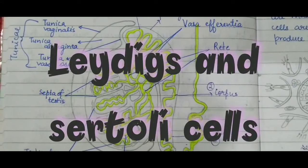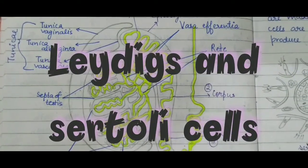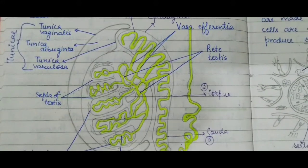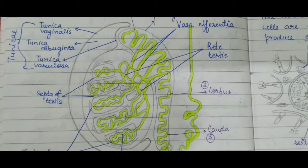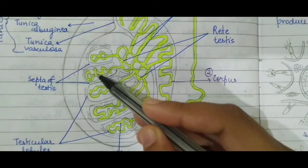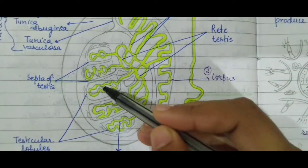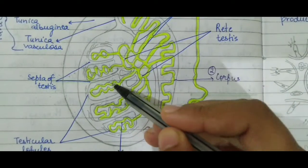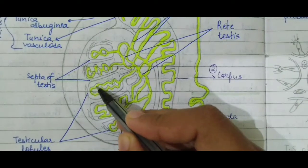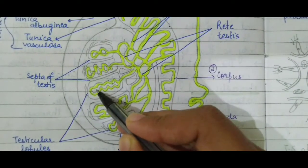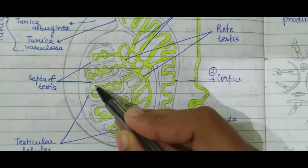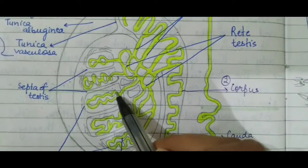In this video we are going to study the difference between Leydig cells and Sertoli cells. In the previous videos of the male reproductive system, we studied that in the testes there are testicular lobules, and these testicular lobules contain two to three highly coiled seminiferous tubules. Within the seminiferous tubules, Sertoli cells are present, and in between the seminiferous tubules, Leydig cells or interstitial cells are present.